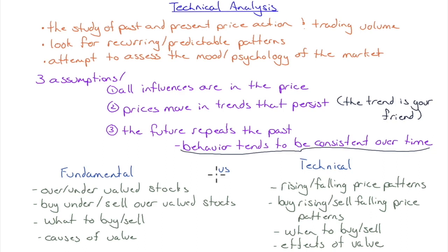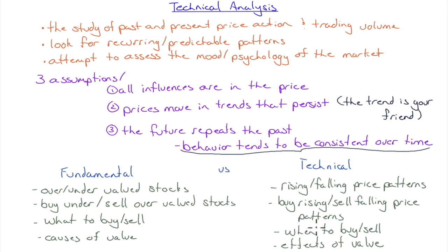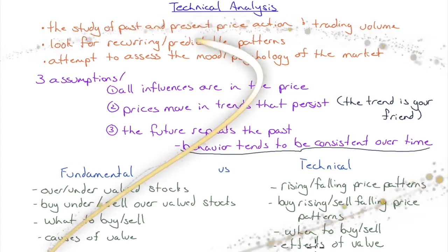Contrasting fundamental and technical analysis: fundamental analysis looks for overvalued or undervalued stocks — buy undervalued, sell overvalued. It tells us what to buy and sell and the causes of value. Technical analysis looks for rising or falling price patterns — not overvalued or undervalued stocks — and tells us when to buy or sell. Technical analysts buy rising patterns and sell falling patterns, focusing on the effects of value in the chart rather than the causes.